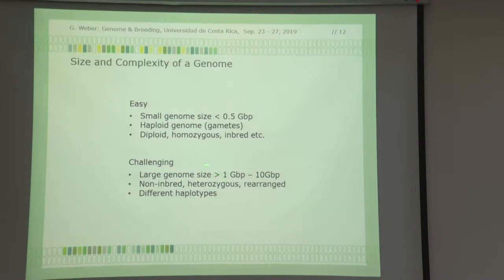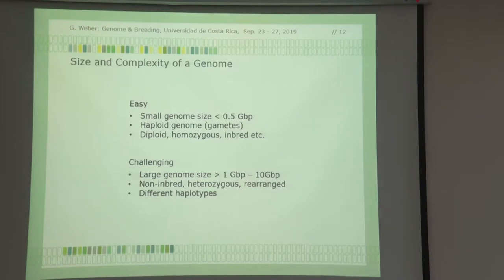The challenging part: large genomes bigger than 1 to 10 gigabases — hop, for instance. Coffee, although coffee is not too bad. Sugar cane is a real challenge. They're heterozygous, heavily rearranged genomes, with different haplotypes. We'll talk about haplotypes later.